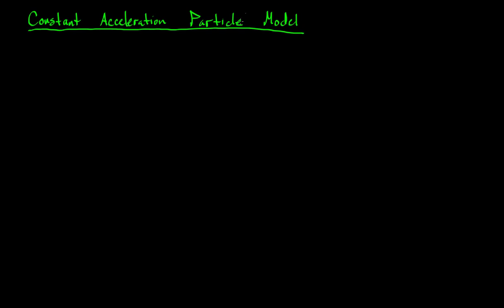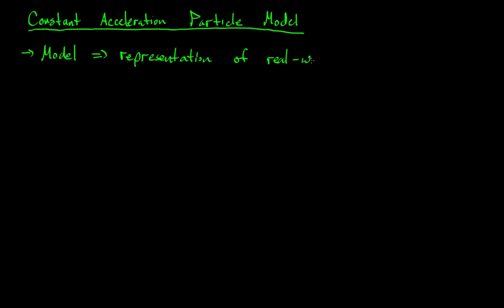In general, a model is just a simplified representation of something in the real world — a representation of real-world phenomena or objects.